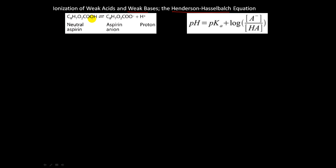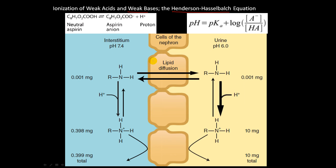So here is the chemical formula of neutral aspirin. So the conjugate base of this neutral aspirin is this molecule here. This is an anion and then you have the proton here. Now why this is important is because of the elimination of drugs through the nephron.